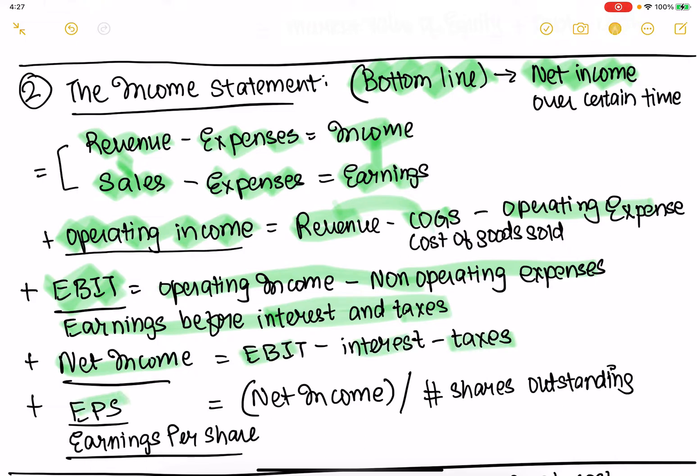EPS is net income divided by shares outstanding — basically saying, for every share, what is the earning?